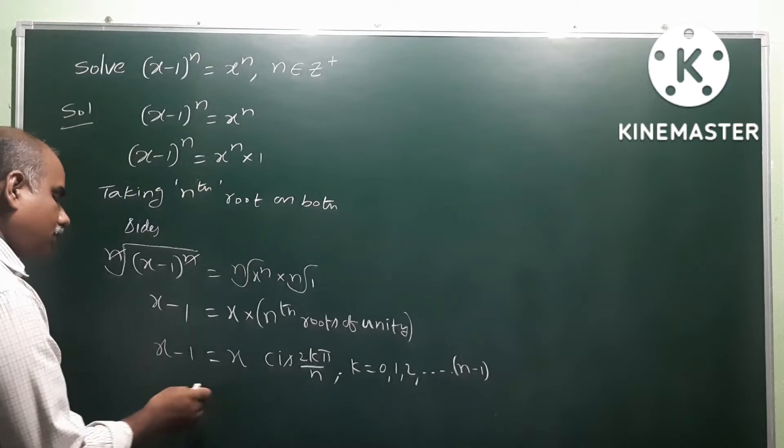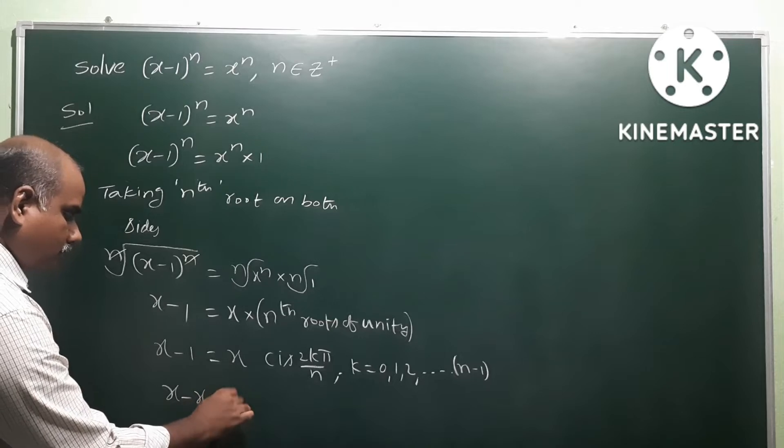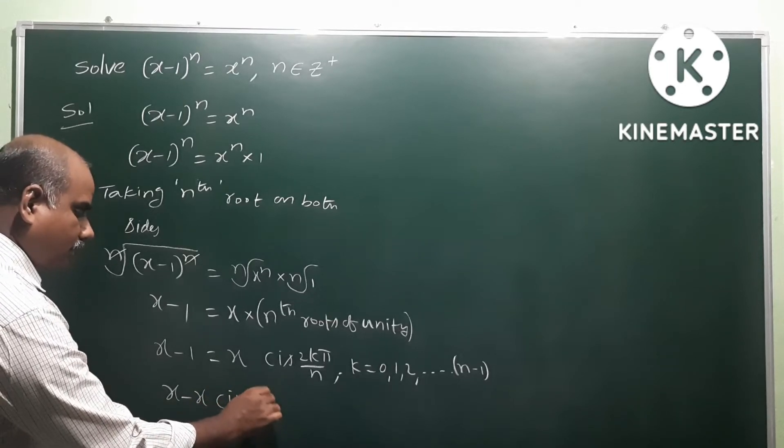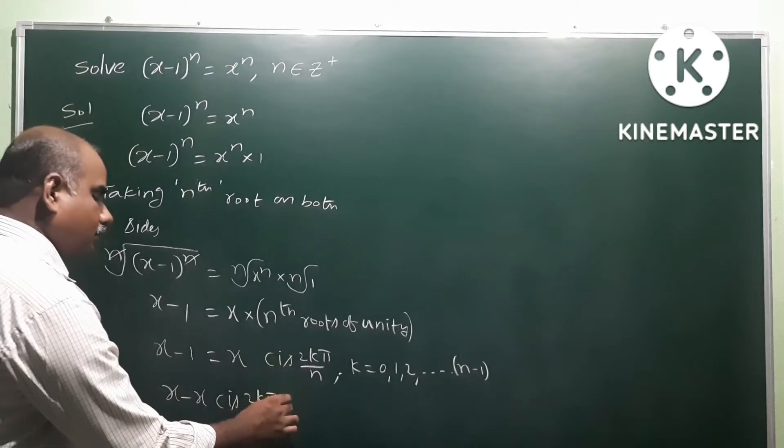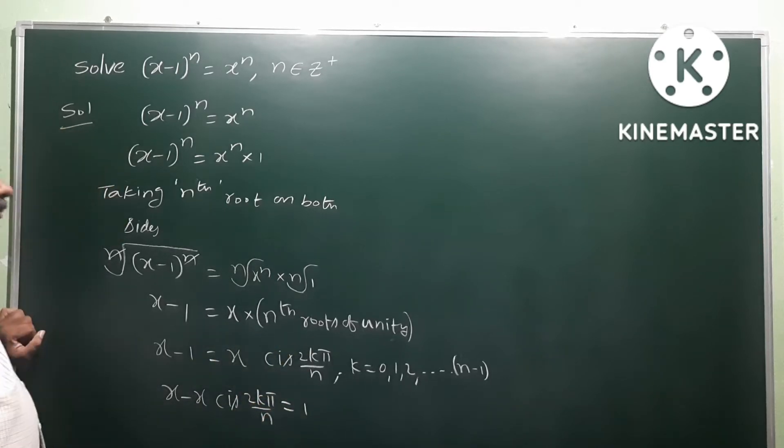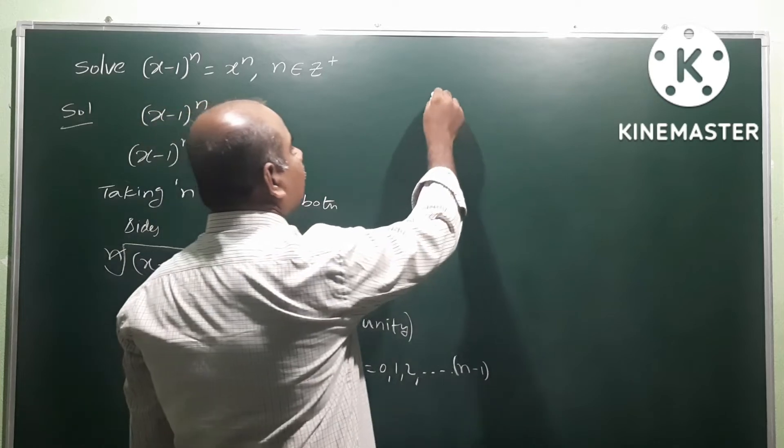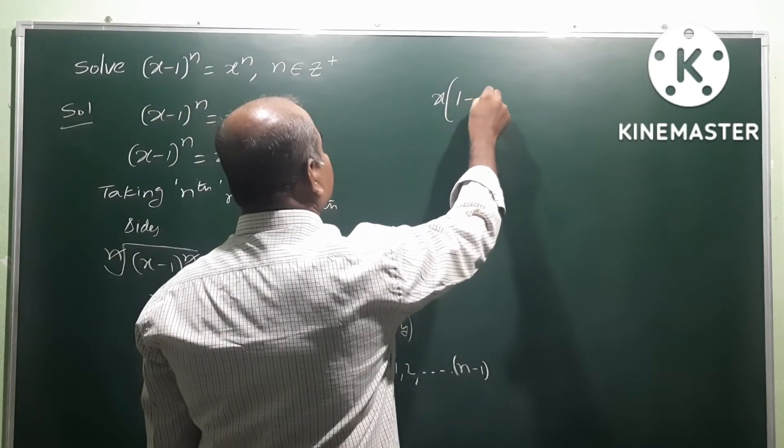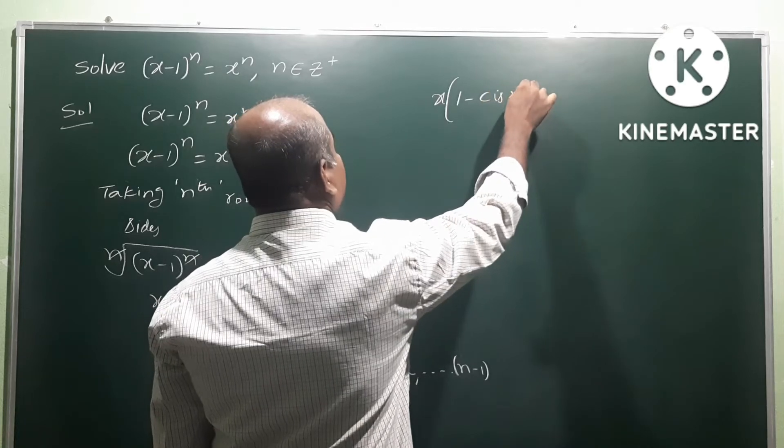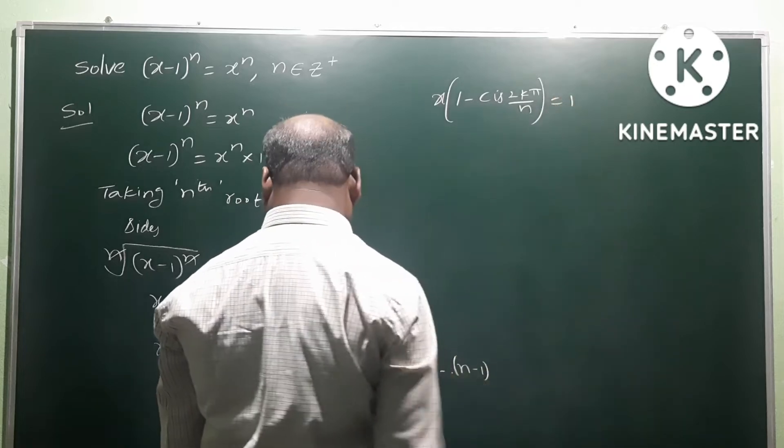Left side: x minus x times cis(2kπ/n). So left side becomes minus 1 on the right side. Taking x common: x times (1 - cis(2kπ/n)) equals 1.